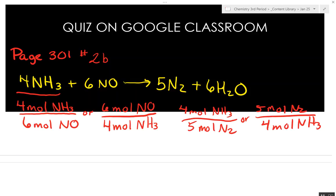And then finally, I go with this one to this one: 4 moles of NH3 to 6 moles of H2O.